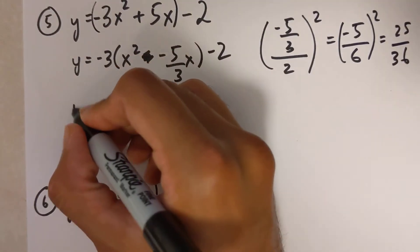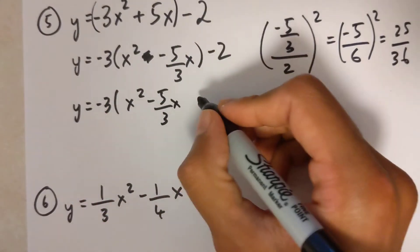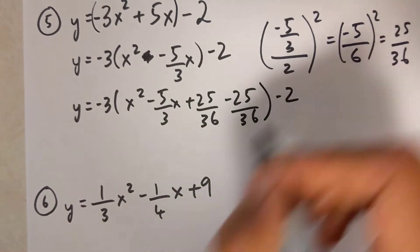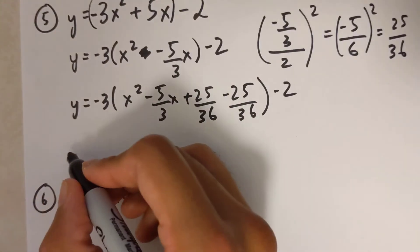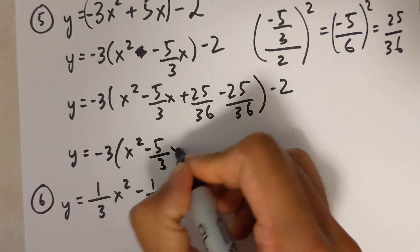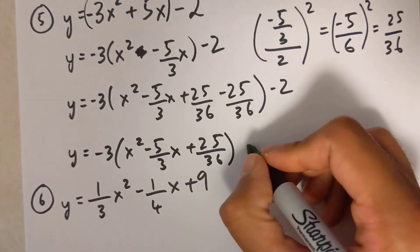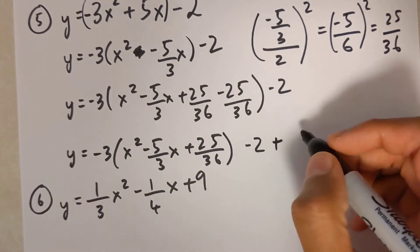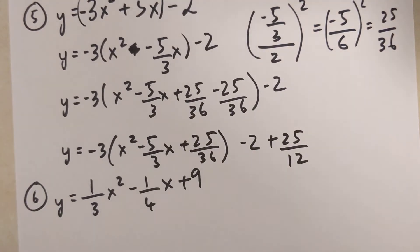So y equals negative 3 times the quantity x-squared minus 5 over 3 x plus 25 over 36 minus 25 over 36, then minus 2 outside. Moving the negative 25 over 36 outside, I multiply by negative 3, giving positive 25 over 12. You can verify that in a calculator.